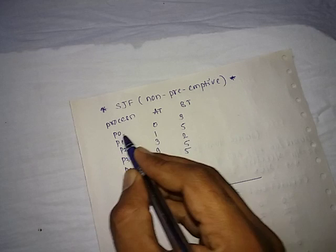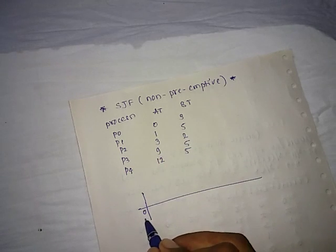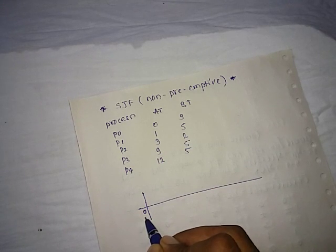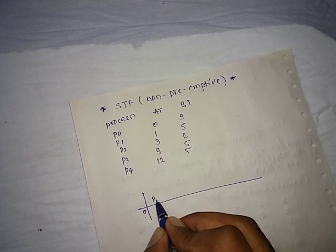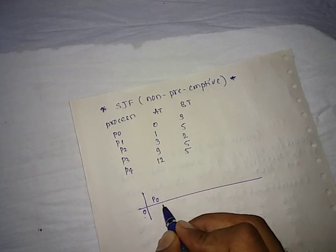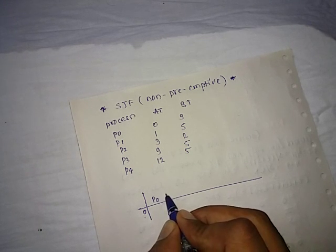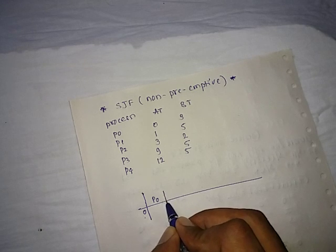Yes, arrival time of P0 process is zero. That means for the time interval zero we are having P0 in our system, so allocate CPU to P0 process. As it's a non-preemptive task, you have to complete the execution of P0, that is up to 3.